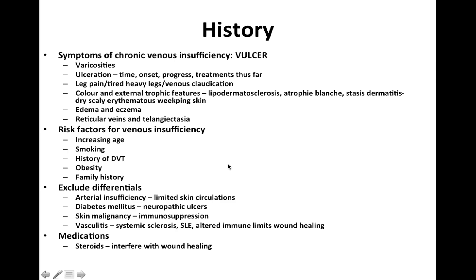Family history is an important factor for venous reflux and incompetent valves. You want to exclude differentials such as arterial insufficiency, diabetes mellitus leading to neuropathic ulcers, skin malignancies, history of immunosuppression, vasculitis, systemic sclerosis, and SLE, as an altered immune system limits wound healing. In terms of medications, steroids, chemotherapy agents, and leflunomide interfere with wound healing.